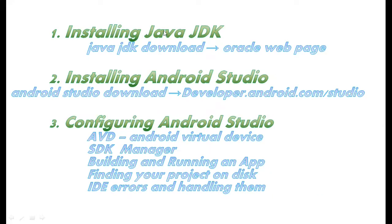Your first step will be to install Java JDK if you don't have it already. The easiest way is to go online, Google for Java JDK download, and you will quickly find the Oracle web page where you can download the installation file and follow the instructions. Click, click, click, finish — that's it. You will quickly have your Java JDK installed.